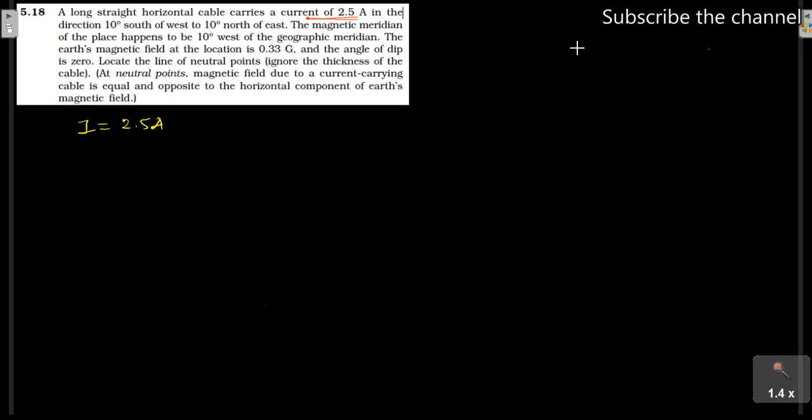So first of all, we can understand the direction of this. This is a vertical line, this is a horizontal line. This is called west, this is called east, this is called north and this is called south.